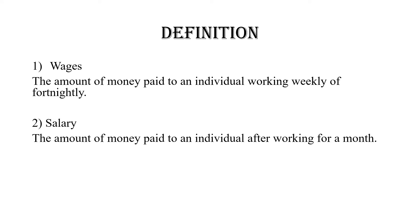Salary is simply the amount of money paid to an individual after working for a month. It's just a matter of understanding the various notations — they're all about getting paid. The difference is: a wage, you get paid after a week or a fortnight; a salary, at the end of the month. Once you work through the month and get paid at the end, that's a salary, not a wage.